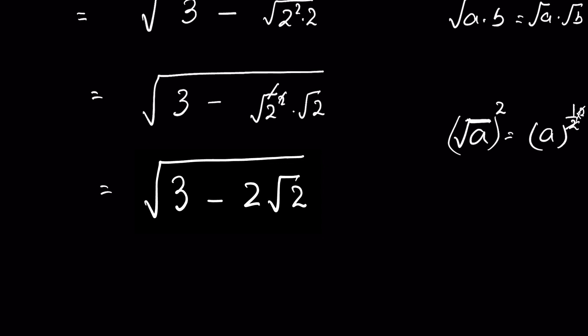So if somehow we can get this 3 minus 2 times square root of 2 in terms of a plus or minus b whole square, then this whole square can remove the square root.